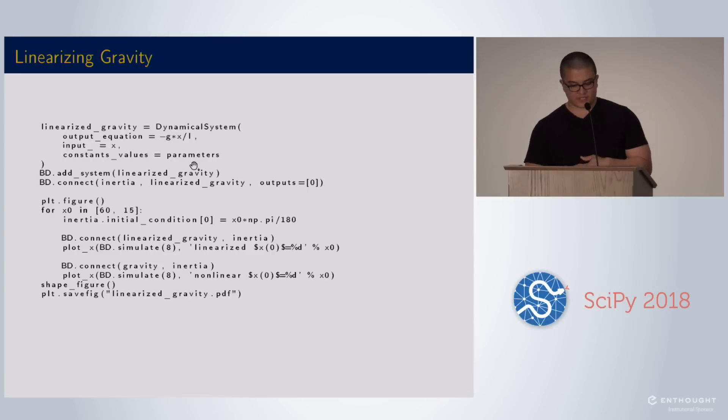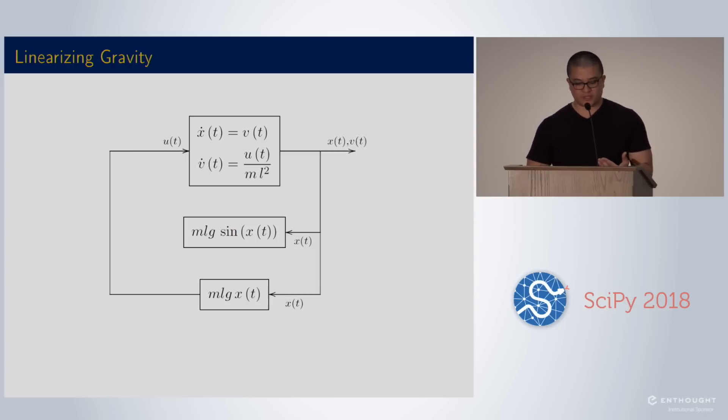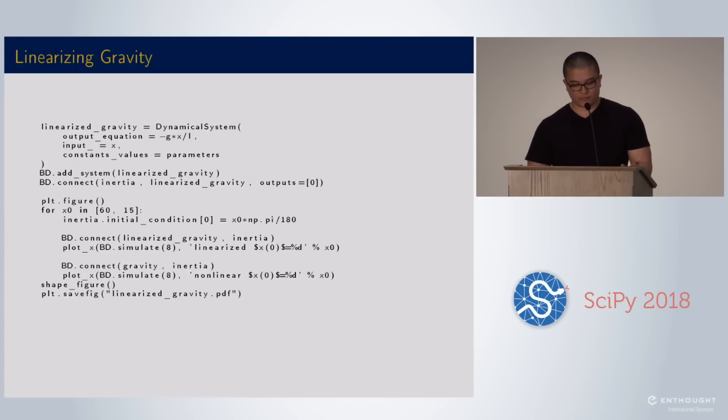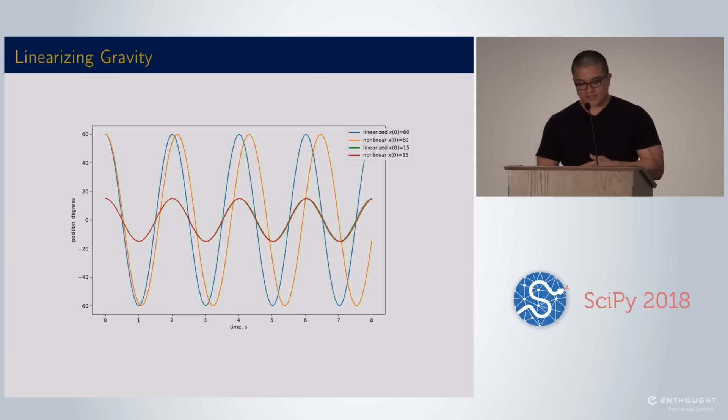We can represent that quite easily with SimuPy. I can create a linearized gravity system. I just do negative G X over L. I can add it to the block diagram and then I can connect it. When I connect to one input, it clears the other inputs. I can also loop over the initial conditions, the angles. I'm looping over that and then inside each loop, I connect one of the gravity models, simulate it, and then connect the other one and simulate it. It's really this exact thing that we would draw, we can do in code quite easily.